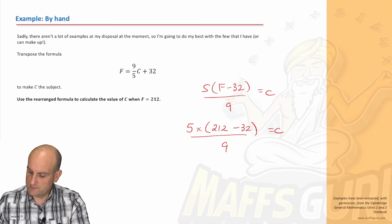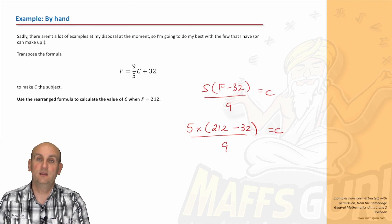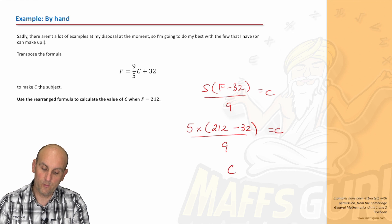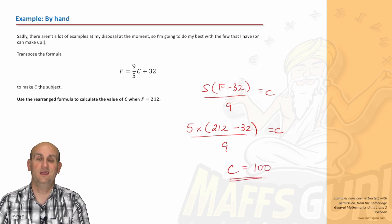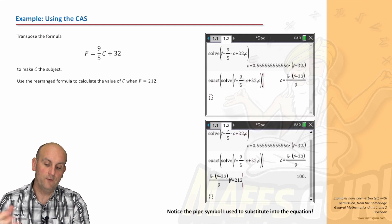Shift divide—oh no, wrong button. So 5 times open brackets 212 minus 32 close the brackets and divide that by 9, if you would, gives me the stunning value of 100. So C is equal to 100. Ka-ching, thank you very much.